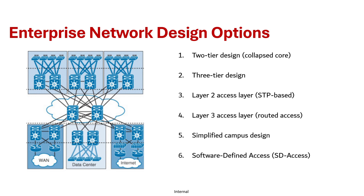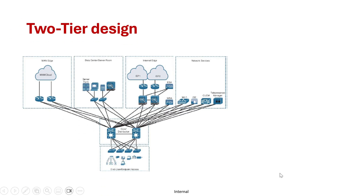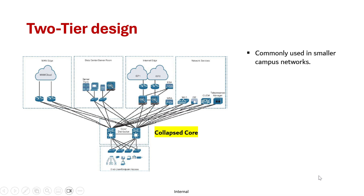One more thing to highlight is that modular campus networks can mix and match these design options to meet your specific needs. The two-tier design, also known as collapsed core, is a simplified network architecture commonly used in smaller campus networks. Unlike the traditional three-layer model with core, distribution, and access, this design combines the core and distribution layers into one, making it more cost-effective and easier to manage.